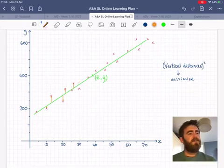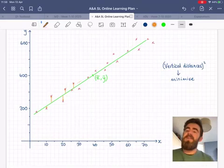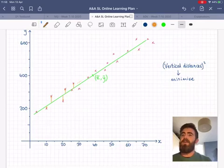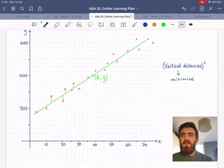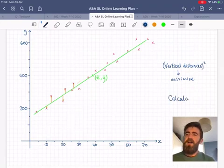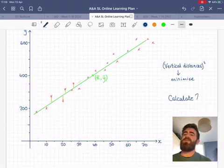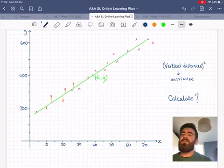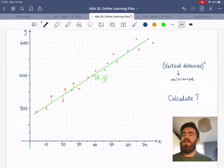So how do we actually find this line? Obviously, we're not going to do that by hand or start drawing lots of lines and adding up distances. That will be way too complicated. And in fact, the formula, whilst doable, just like correlation coefficient, we won't have to do ourselves manually, at least not in the exams, maybe in internal assessments. You might want to do that then.